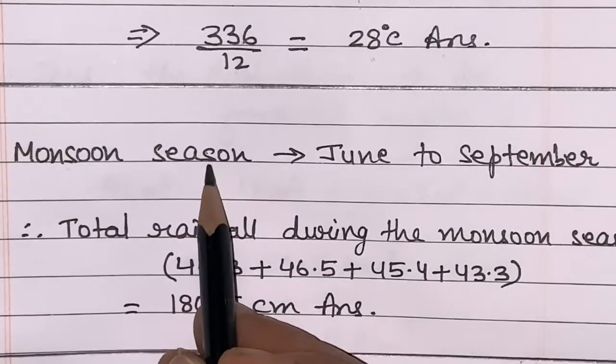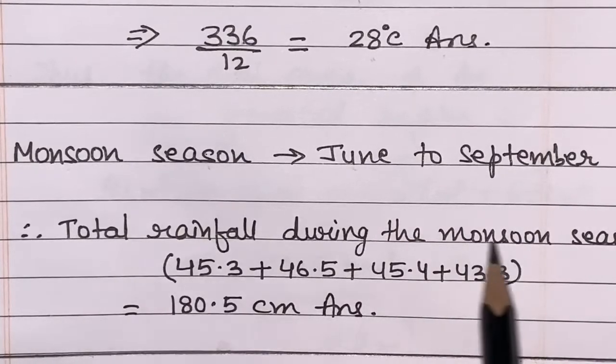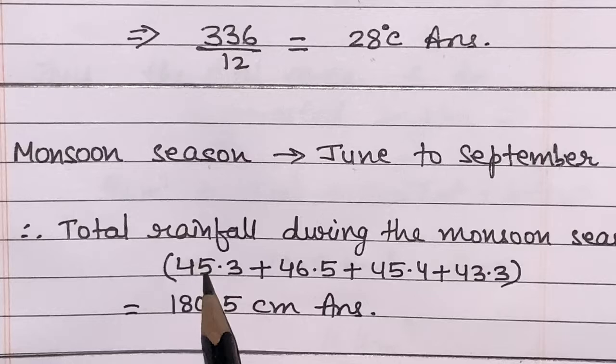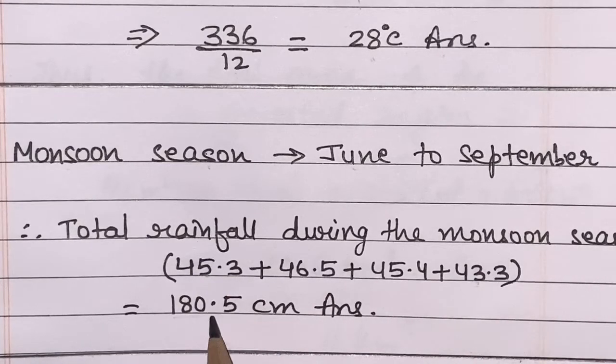The monsoon season comes between June to September. Then total rainfall during monsoon season from June to September, you will add up the rainfall and you will get the answer.